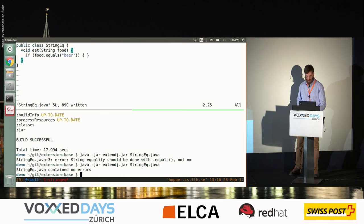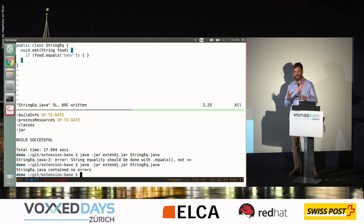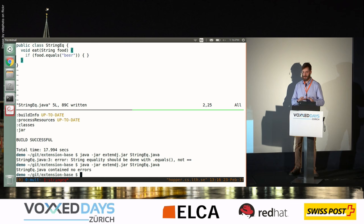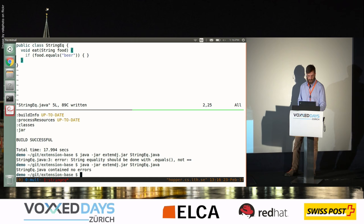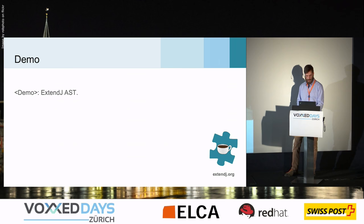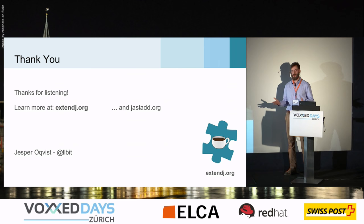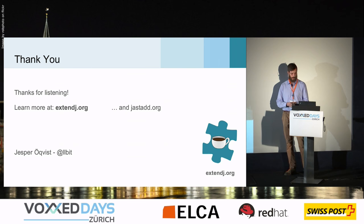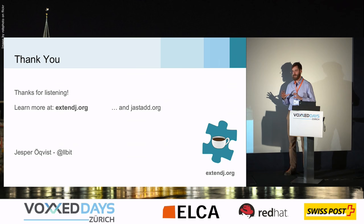So that's a very quick demonstration of how to make an extension in the system. We try to make it very easy to get started with. Our students who use this have about three weeks to learn the system with no previous experience except having been introduced to the concept of attribute grammars, and they managed to make useful extensions in this time. If you want to find out more, you can head over to extendj.org where we have documentation, how to get started, and tutorials. And if you want to learn more about attribute grammars and the JastAdd system, we have a homepage for that as well. Thank you so much for listening.